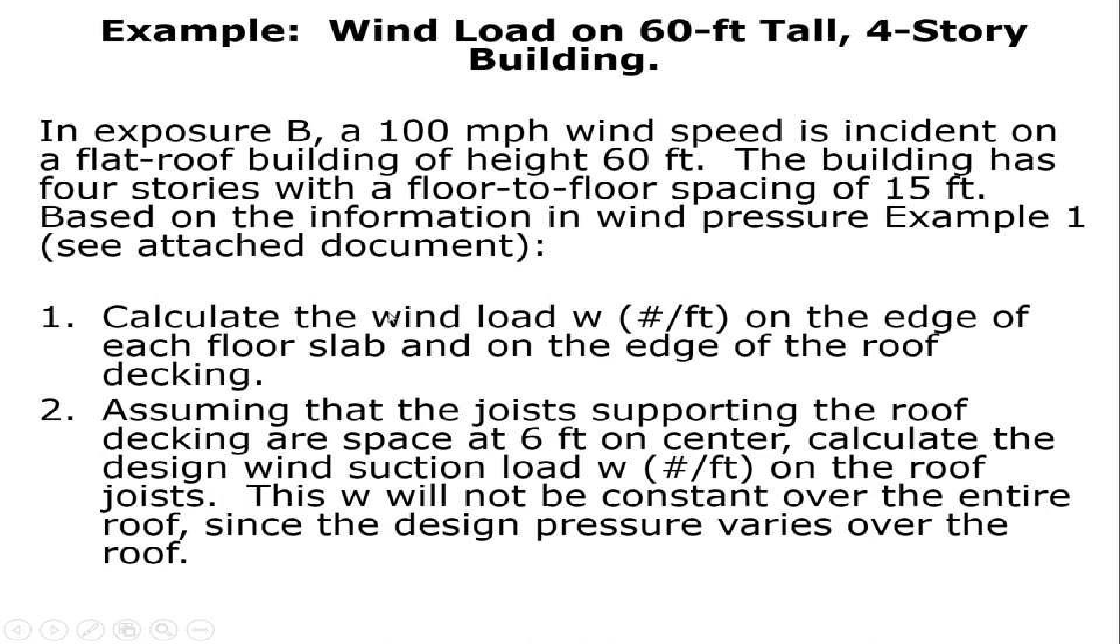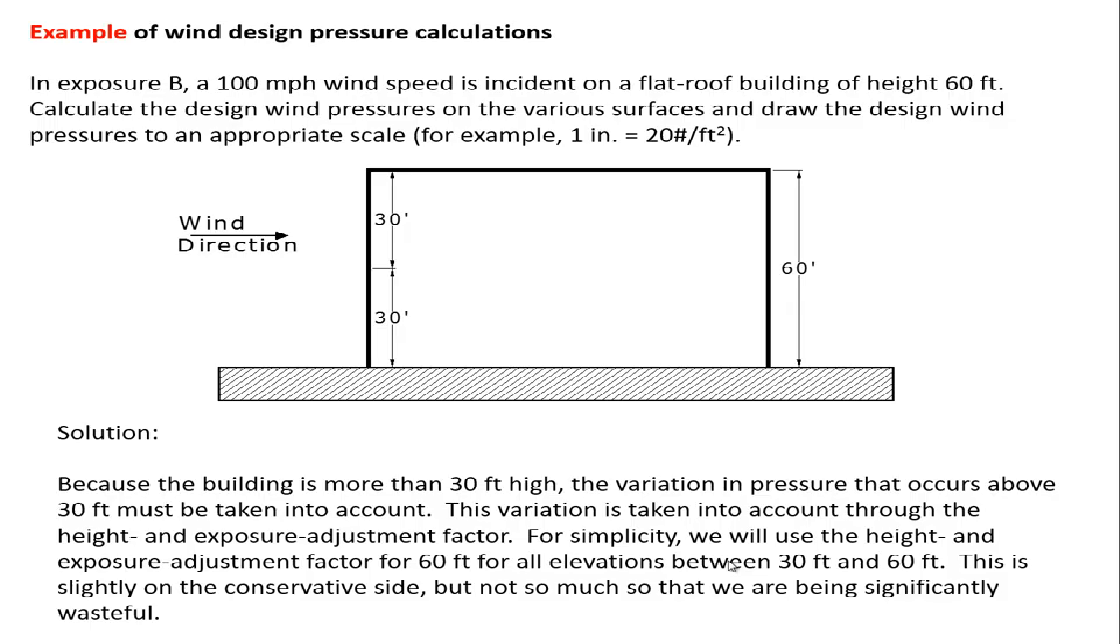Our goal is going to be to calculate the wind load W in pounds per foot on the edge of each floor, and then in addition to that we're going to assume that the joist spacing for the joist supporting the roof decking is six feet on center, and we're going to calculate the wind suction load W in pounds per foot on the roof joist. That will not be a constant over the entire roof, just like the edge force for the floors will not be constant because the design pressure varies over the area of the roof.